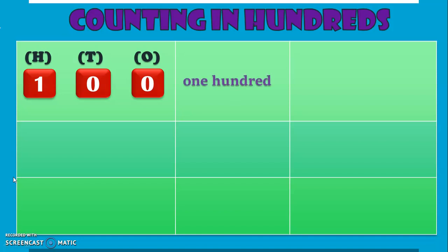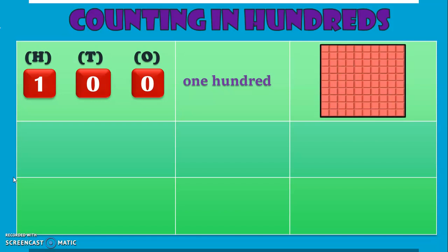What is the number name? It is ONE HUNDRED. How do you represent 100 in blocks? We know that 10 tens makes 100. Just like how 8 tens makes 80, 9 tens makes 90, 10 tens makes 100.